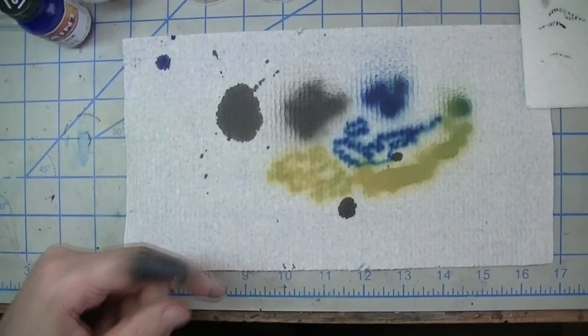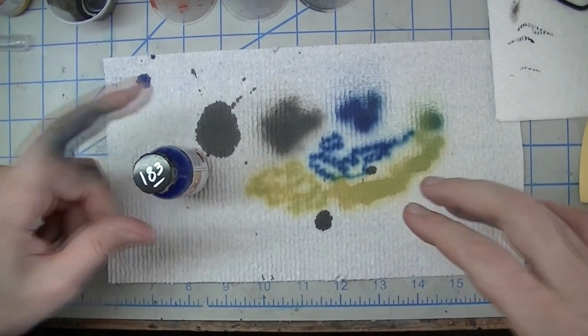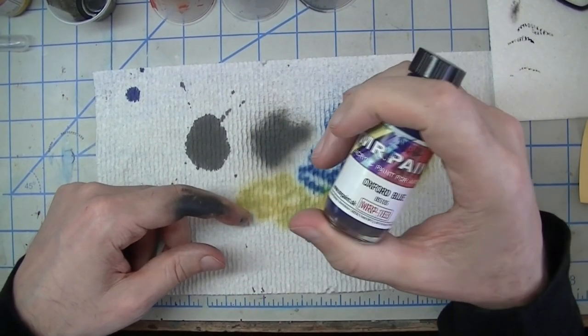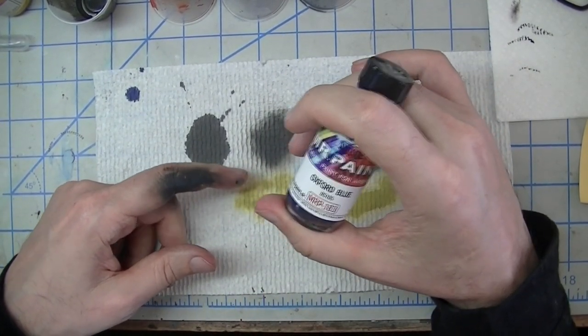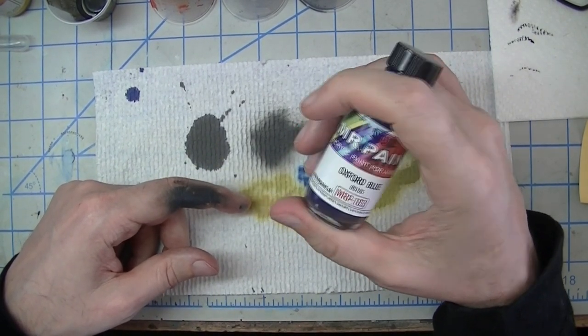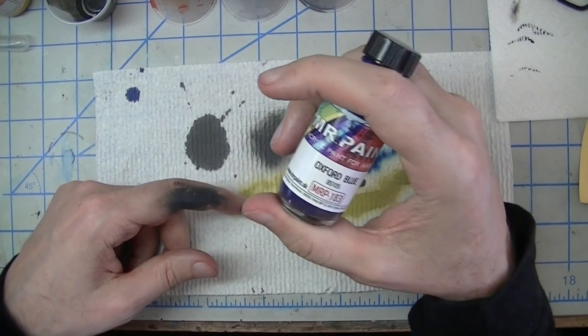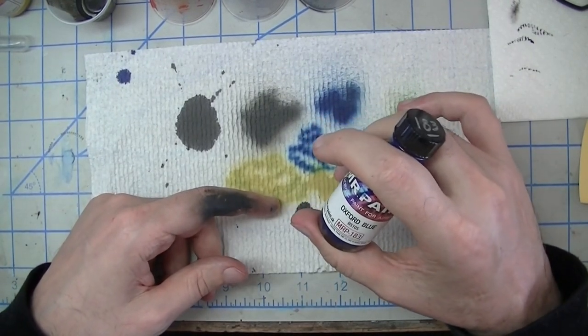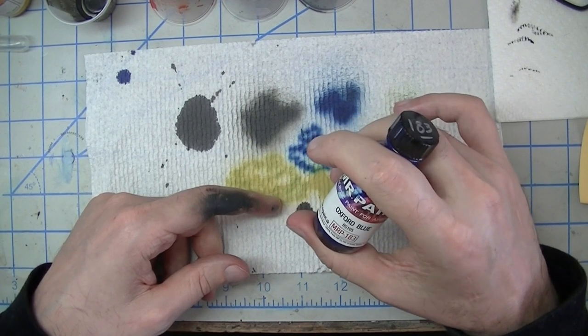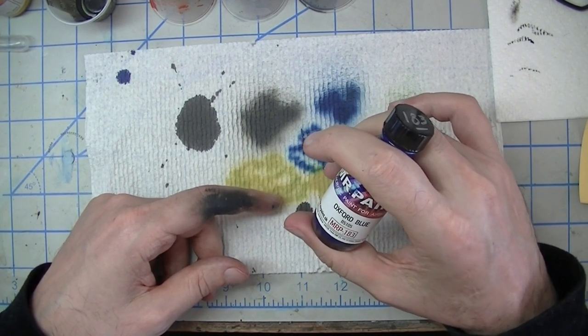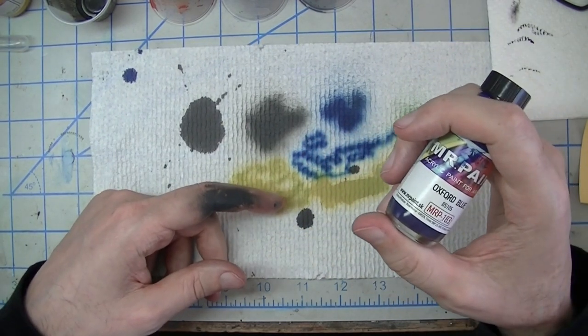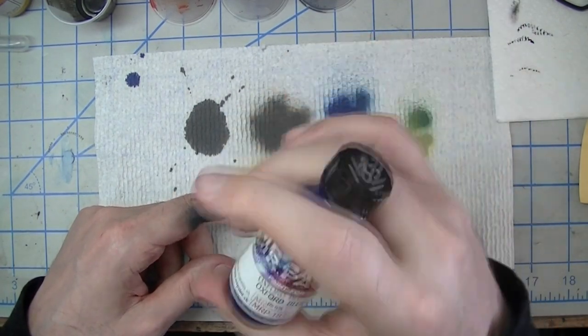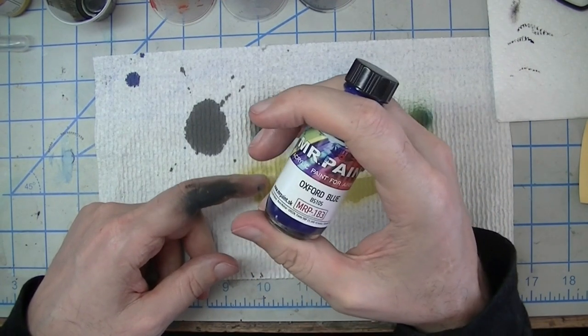I almost forgot to make this last point—one of the key things that makes this specifically useful with MRP is that you don't have to thin this stuff to work with it. Technically you could do what I'm doing here with any paint, acrylics or lacquers, but if those are materials that you have to blend with thinners or some kind of flow agent or retarder to make them work in your airbrush, obviously this doesn't work. But MRP is ready to spray right out of the bottle and that's one of my favorite things about it.